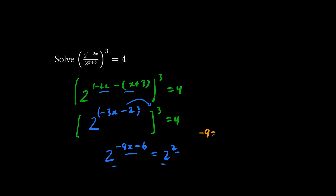Negative 9x minus 6 equals 2. Therefore, 9x equals negative 6 minus 2, which is negative 8. So x equals negative 8 over 9.